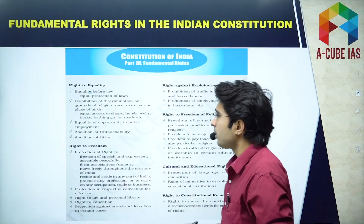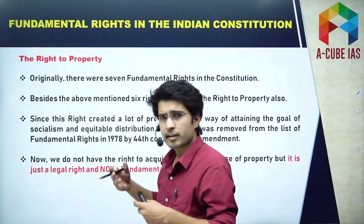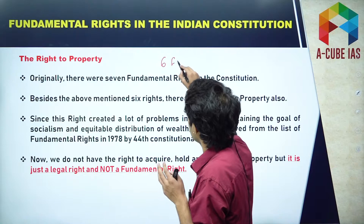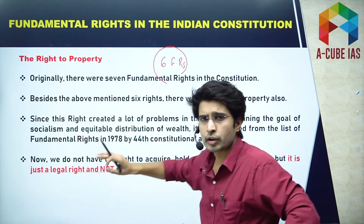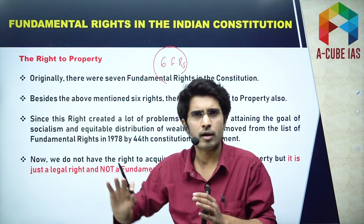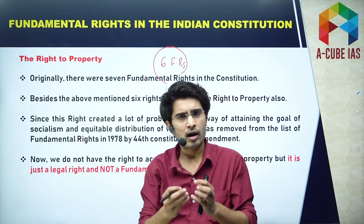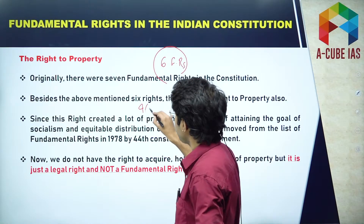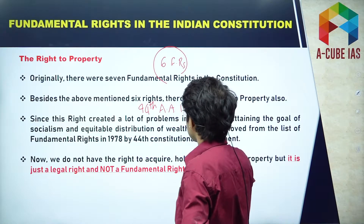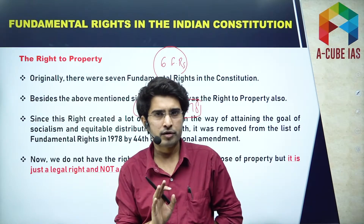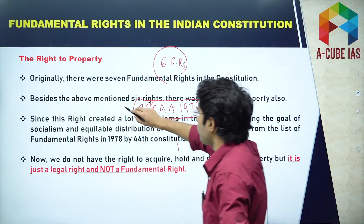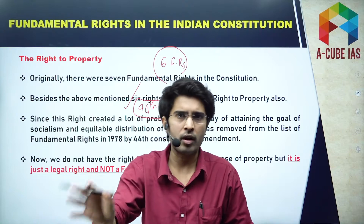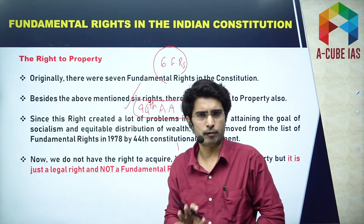Under fundamental rights, we have so many rights. There used to be seven rights earlier, but now there are six fundamental rights. The right to property has been removed from the list of fundamental rights — it is no longer a fundamental right; it is merely a legal right now. It was removed by the 44th Amendment Act, 1978. Just remember this fact — it can be asked in prelims.